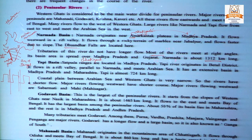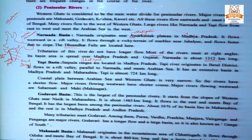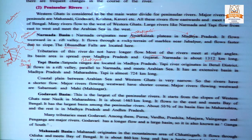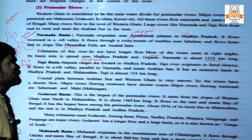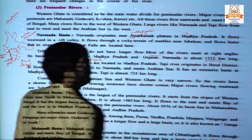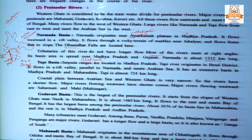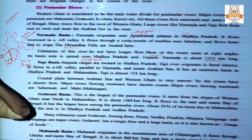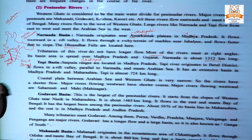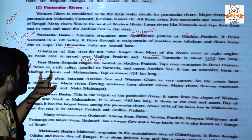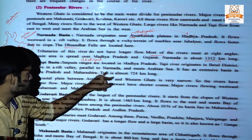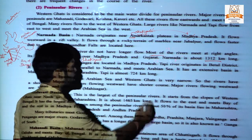Narmada is about 1312 kilometers long. Next is the Tapi Basin. The Satpuda ranges are located in Madhya Pradesh. The Tapi river originates in the Betul district, which is located in Madhya Pradesh. It flows in a rift valley, parallel to Narmada, and meets the Arabian Sea.